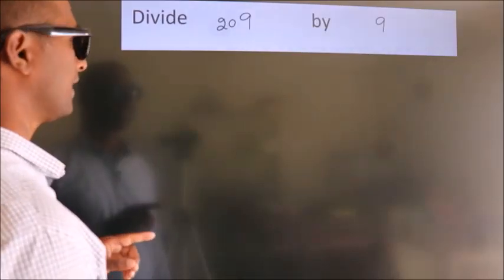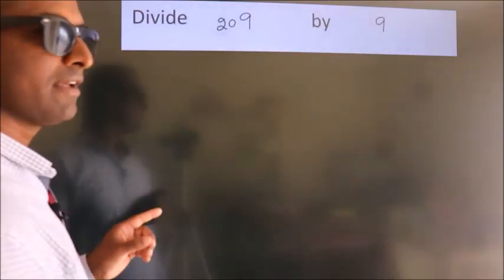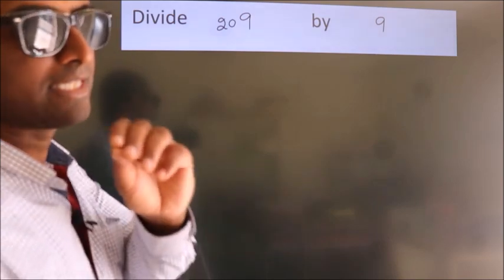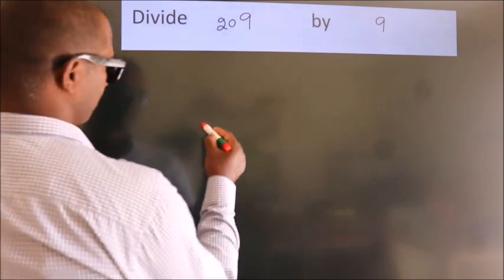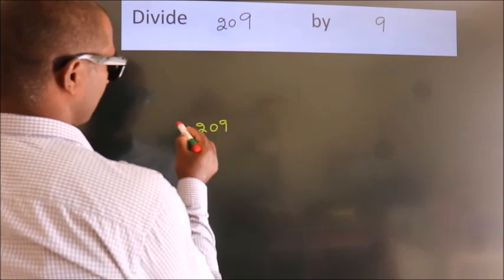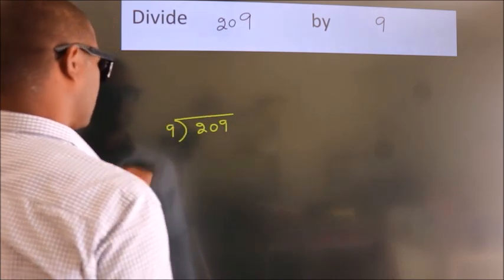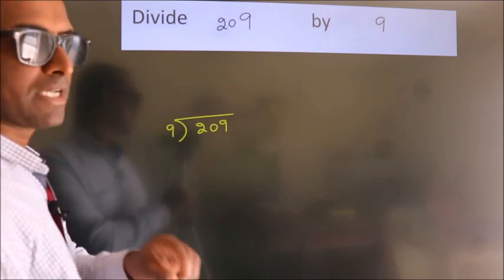Divide 209 by 9. To do this division, we should frame it in this way: 209 here, 9 here. This is your step 1.